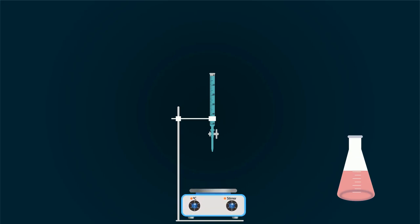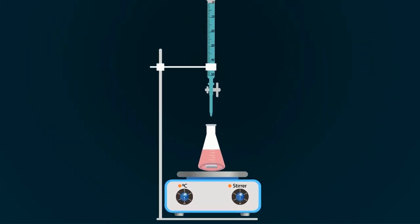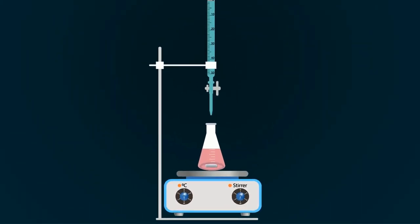Put magnetic bar into the conical flask. Put this conical flask onto the magnetic stirrer and power it on. The magnetic bar will start rotating. Now start pouring 0.1 molar HCl solution drop wise.